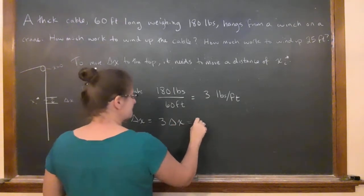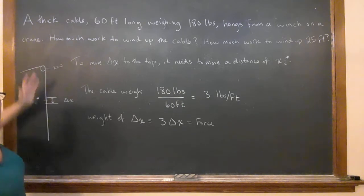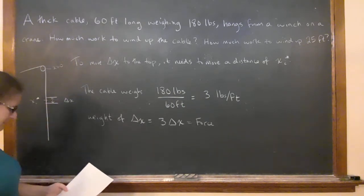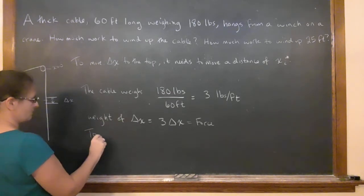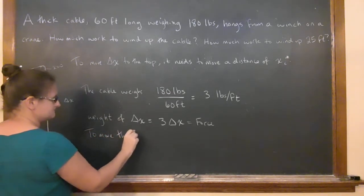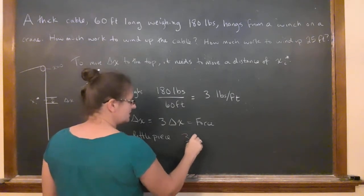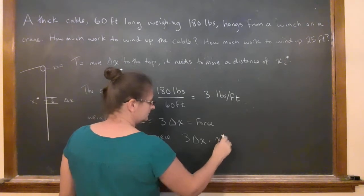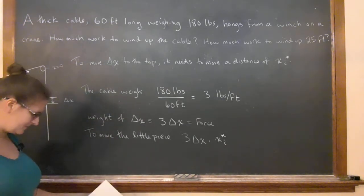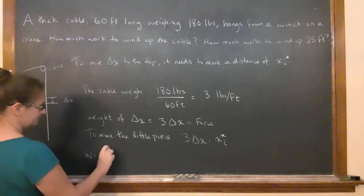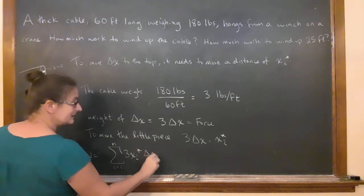So that's the force. That's the force that we have to counter in order to move it up, in order to counter the force of gravity. So to move this little piece all the way up, it's going to be my force times my distance, so that's xi star. So then if I think about that as summing all the way up on the cable, I'm going to get the sum from i equals 1 to n of 3 xi star delta x.